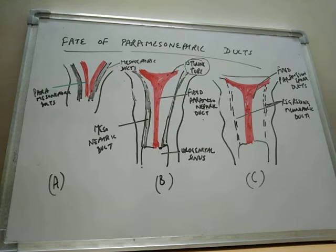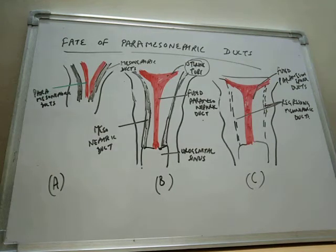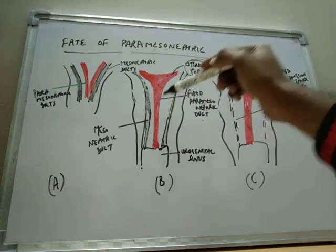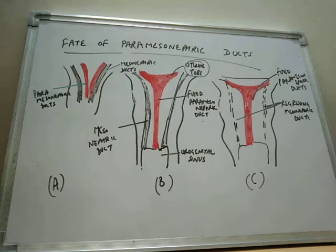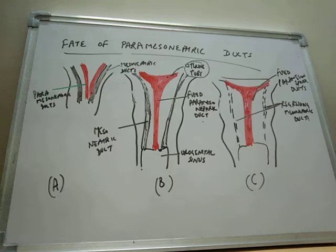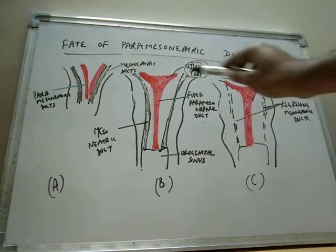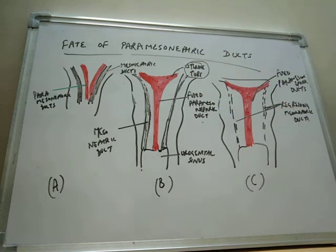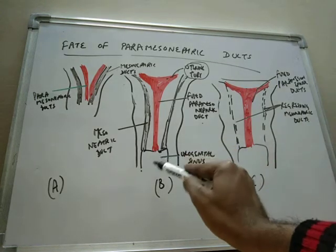The epithelium of the uterus is formed from the fused paramesonephric ducts. As the thickness of the myometrium increases, the unfused horizontal parts of the two paramesonephric ducts come to be partially embedded within this substance, and this forms the fundus of the uterus.